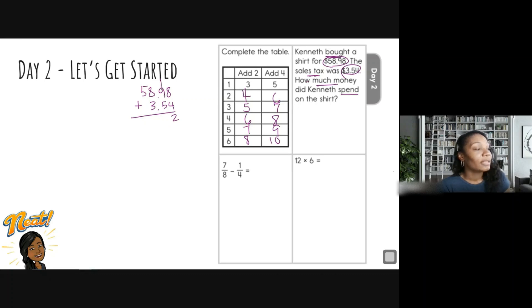Nine. Oh, I carried my one. Okay. So nine plus one gives me ten. Ten plus five is fifteen. Carry the one there. All right. Eight. Eight plus one is nine. Nine plus three. So nine, ten, eleven, and twelve. I'm going to carry my one. Five plus one is six. And don't forget to bring down your decimal. So Kenneth spent $62.52 on that shirt. It's an expensive shirt.